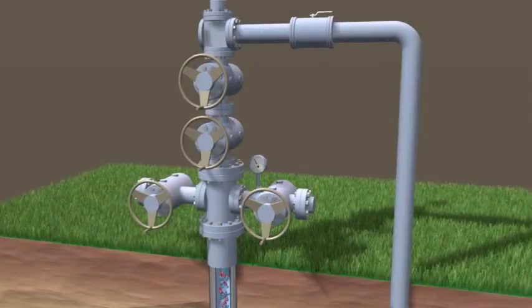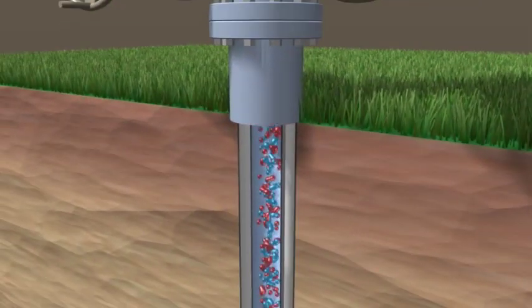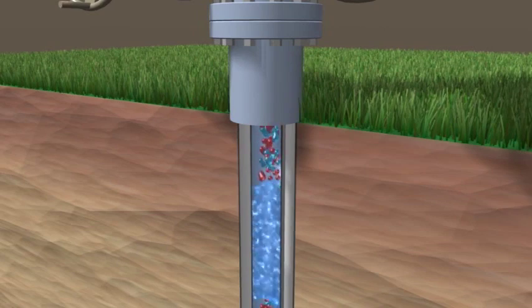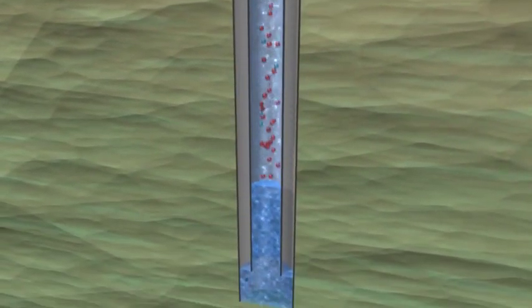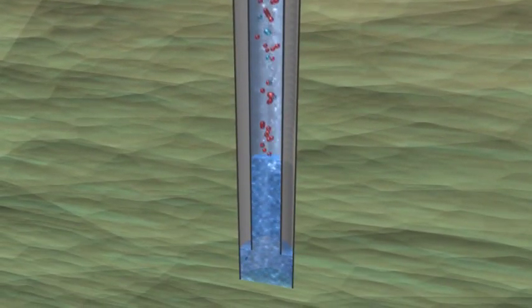As more fluids collect, the flow slows even further. Now slug sizes increase, the problem feeds on itself, and there's even more fallback. The more fluids that accumulate down whole, the more the production flow slows.